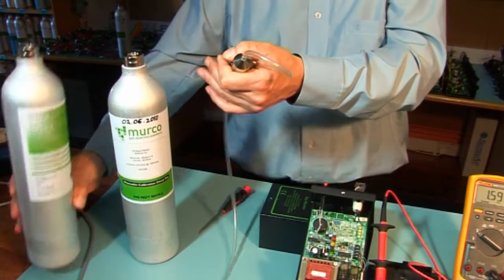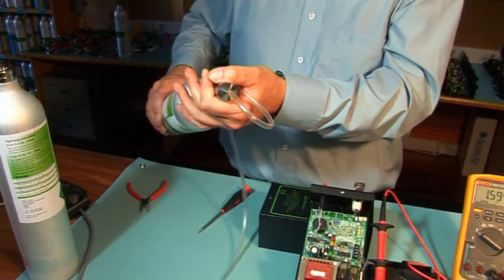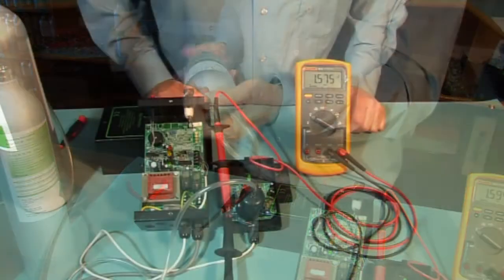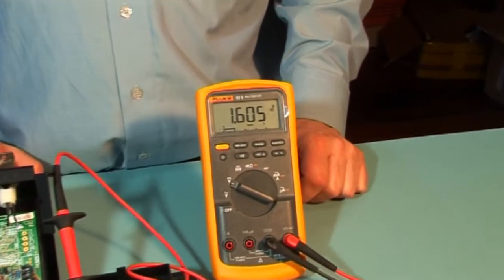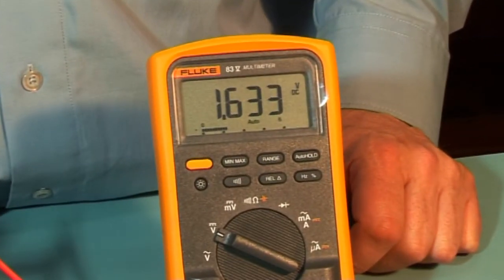Without removing the calibration hood from the sensor, change to the high-level gas and allow the standby voltage to climb. Once the voltage stops climbing and stabilizes, record this high-level alarm voltage.